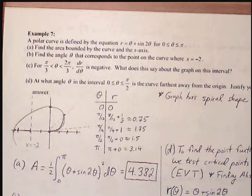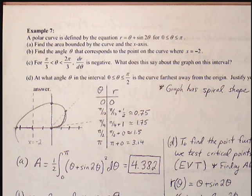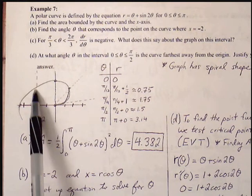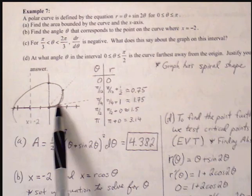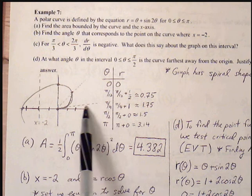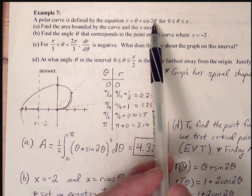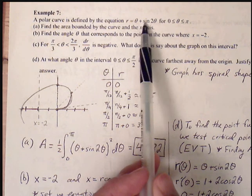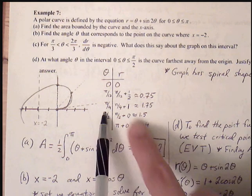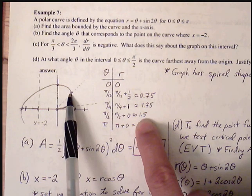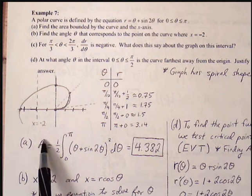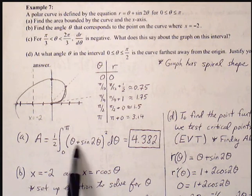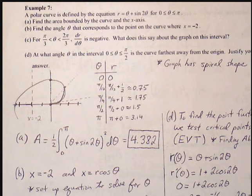Example 7, final example. A polar curve is defined by r equals theta plus sine of 2 theta, between 0 and pi. Part a: Find the area bounded by the curve and the x-axis. Sketching the curve: at 0, r equals 0; at pi over 4, roughly 1.75; at pi over 2, about 1.5; at pi, about 3.14 — showing a spiral effect. The area is simply one half times the integral from 0 to pi of r squared d theta, giving approximately 4.382.